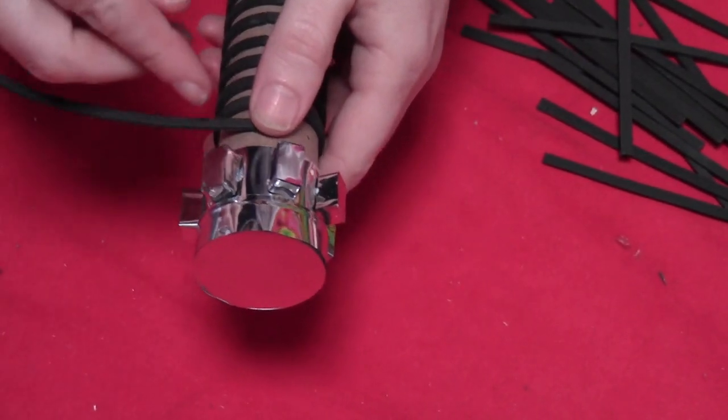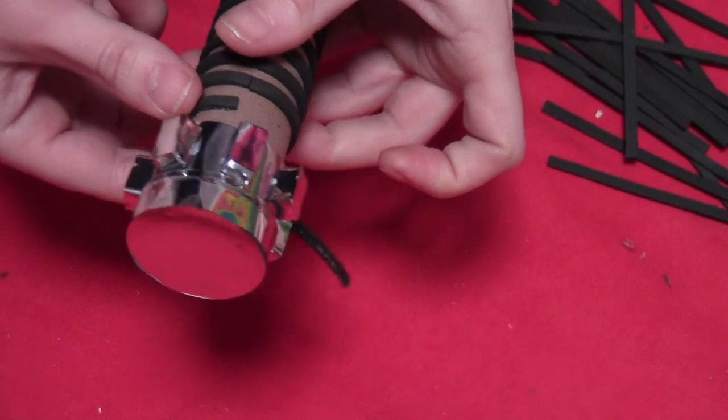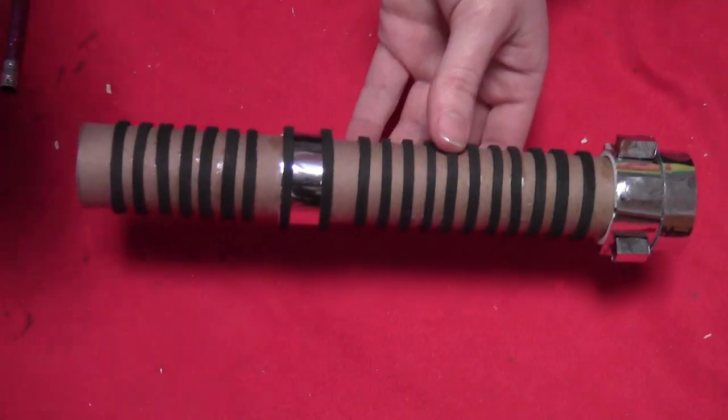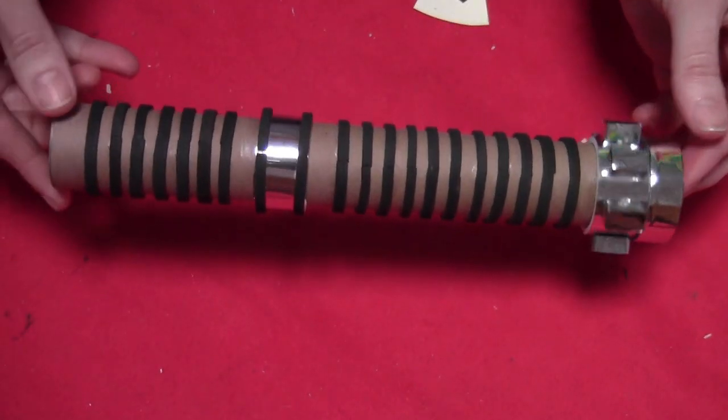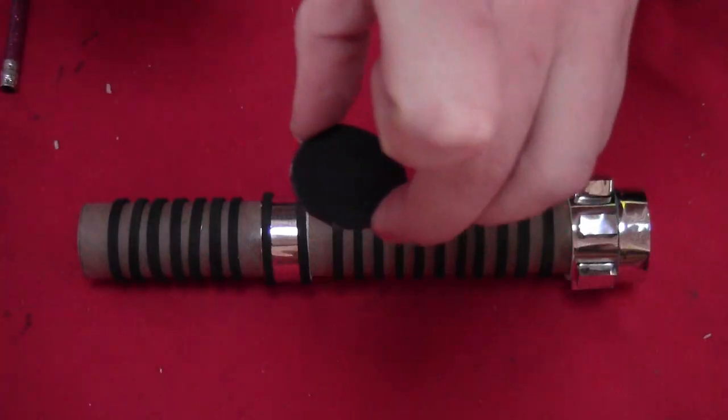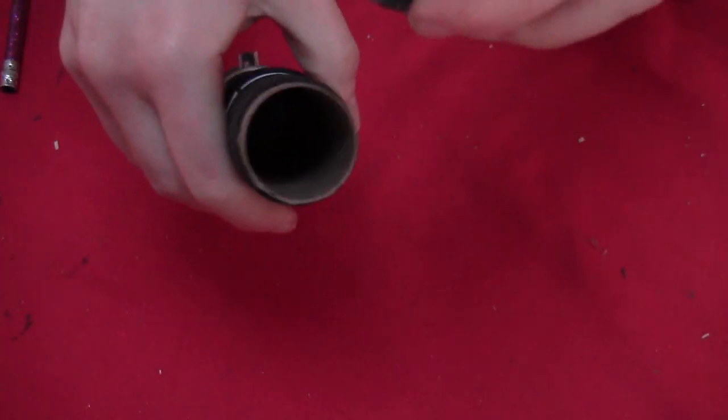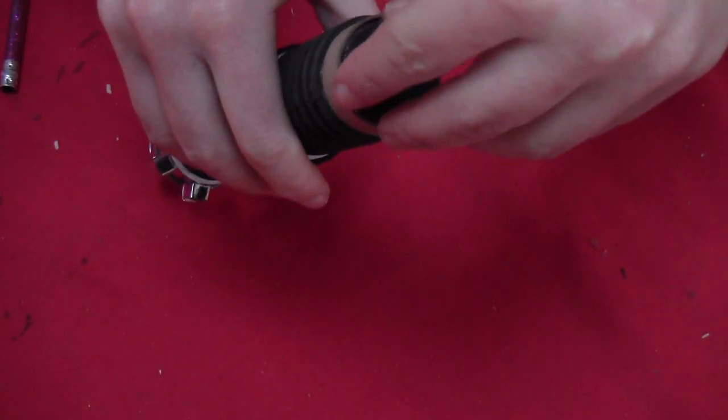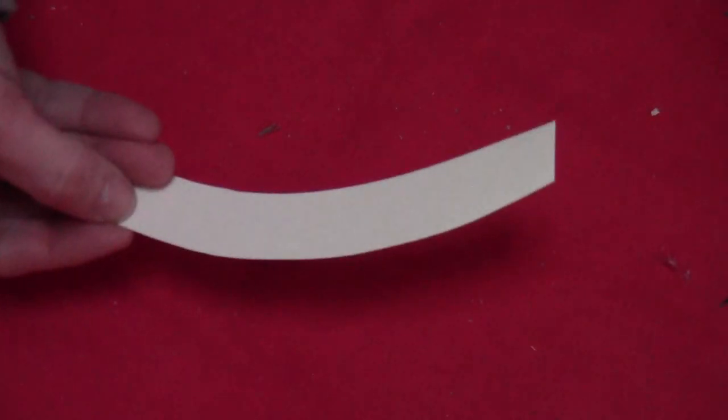Then I cut a bunch more of those little thin strips and put them around the top and bottom sections of the cardboard tube. Then I took just a plain piece of craft foam, put a little bit of glue on the edges, and popped that in the open edge of the tube.